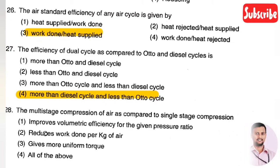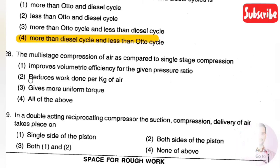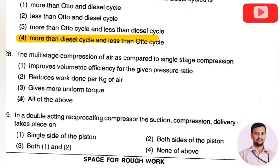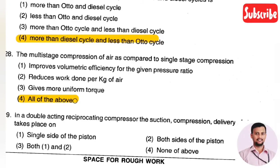The next question: in multi-stage compression of air compared to single-stage compression — Option 1: improves volumetric efficiency for a given pressure ratio, Option 2: reduces work done per kg of air, Option 3: gives more uniform torque, Option 4: all of the above. The right answer is Option 4, all of the above. Multi-stage compression provides better volumetric efficiency, reduces work per kg of air, and gives uniform torque.